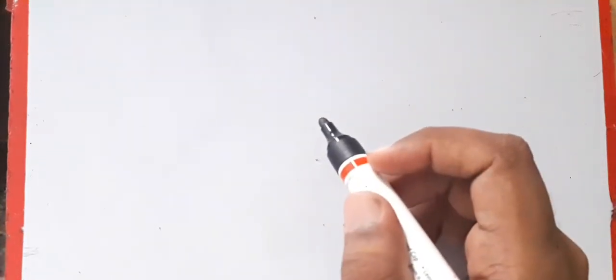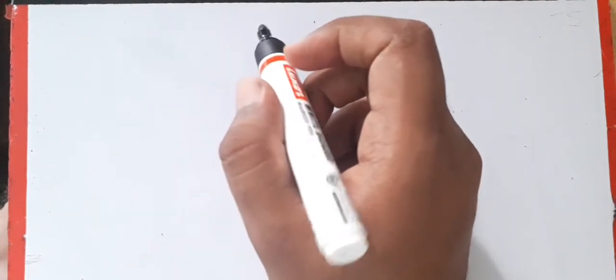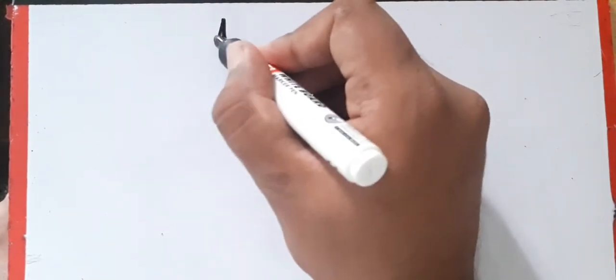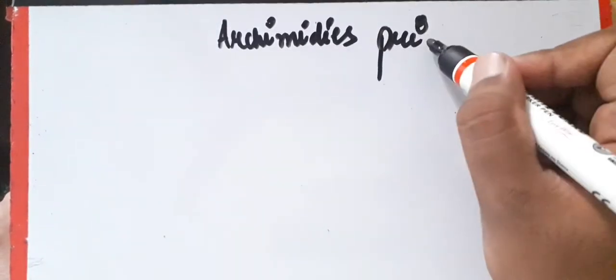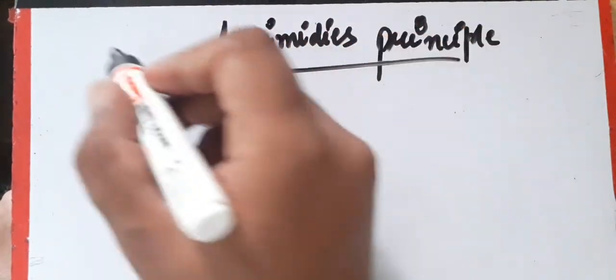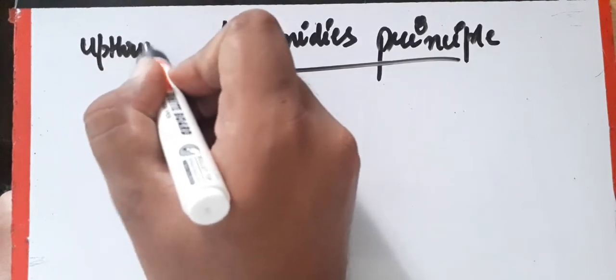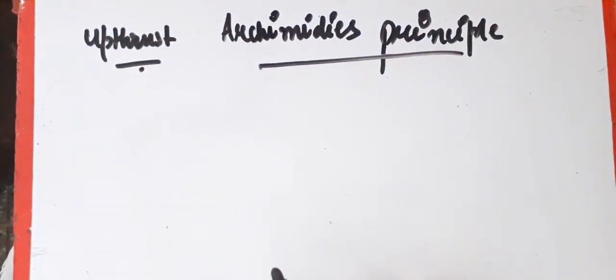Hello students, today we are going to study a very important chapter of class 9th — Archimedes principle and buoyant force, also called upthrust. We are going to cover these two topics in today's class. First of all, we will understand what is upthrust.